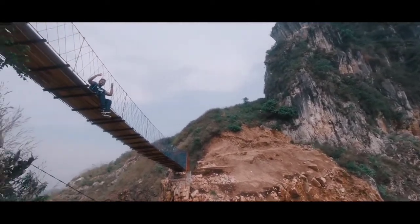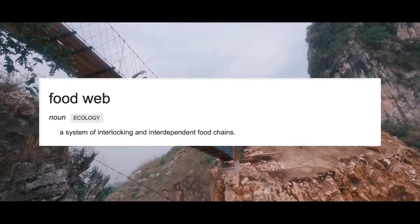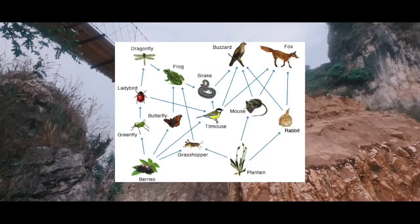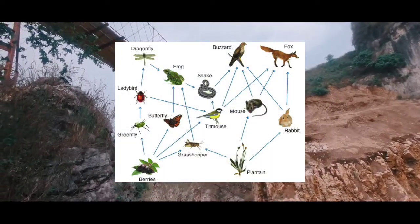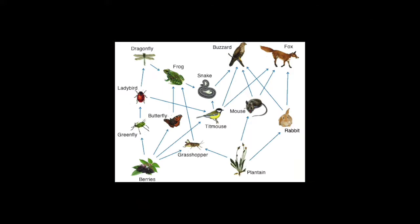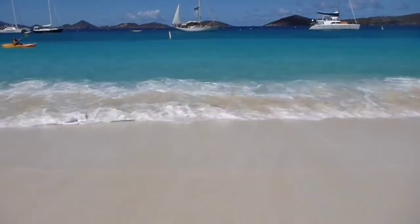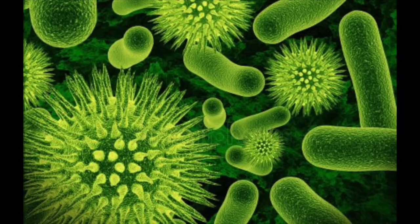With food chains, you are also able to find food webs, which are basically food chains linked together, and usually describe the feeding relationship within a habitat. This contains its extensions, like us humans and even bacteria.